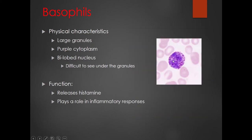Basophils have very large granules — so abundant that they actually obscure the nucleus. The cytoplasm tends to be purple, and the nucleus is bi-lobed, but it's very difficult to see because it's hidden by the purple granules. Basophils play a role in inflammatory responses; they release histamine. If you've ever been congested and taken Benadryl, you're taking an antihistamine, which tamps down the activity of these basophils.